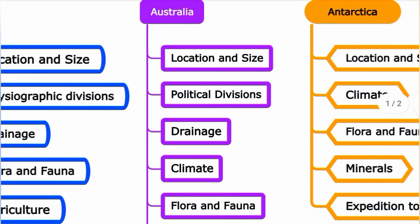Next is Australia. Australia's location and size — it is located in the south. Politically, Australia is divided into 6 states and 2 territories.